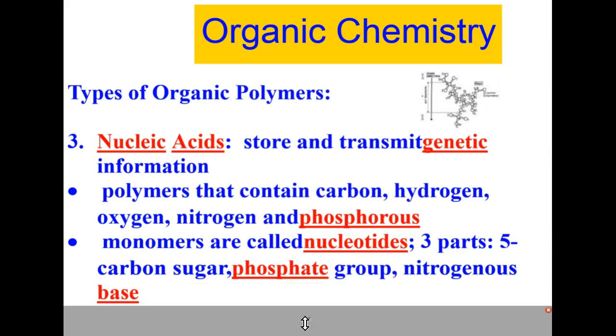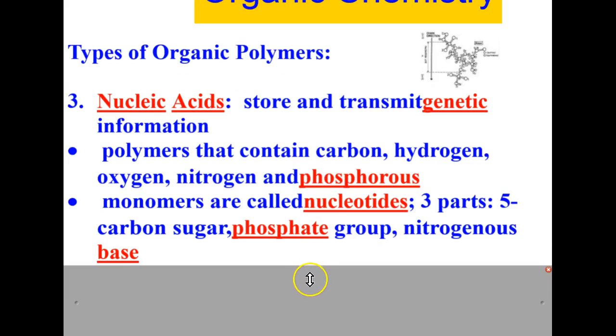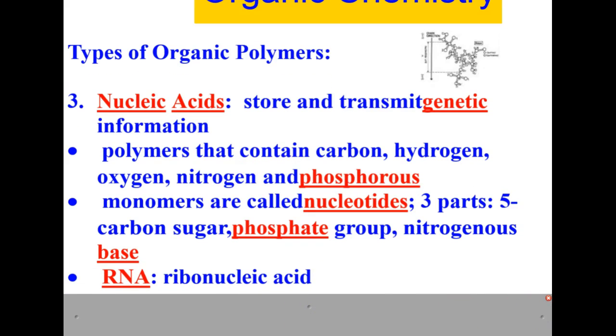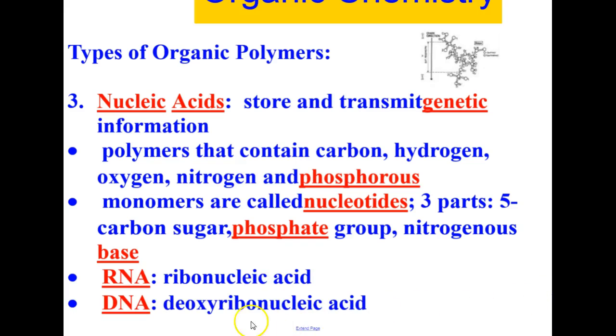Monomer nucleic acids are called nucleotides. They have three parts - a 5-carbon sugar, a phosphate group, and a nitrogenous base. There are generally two types of nucleic acids. One is RNA, which is the abbreviation for ribonucleic acid, and then there's DNA, deoxyribonucleic acid.